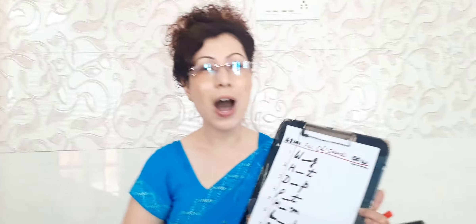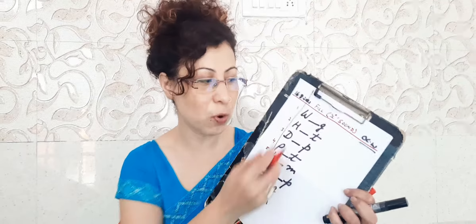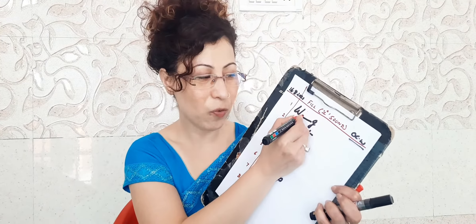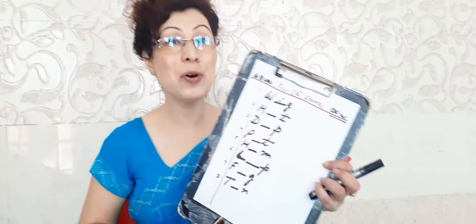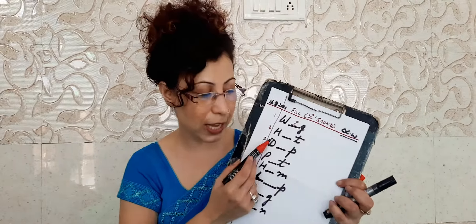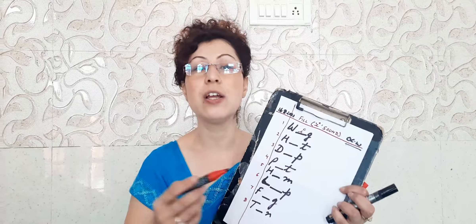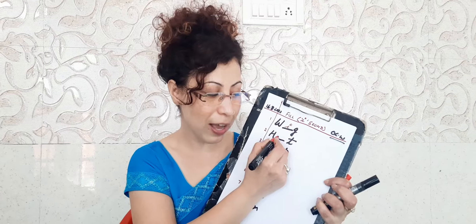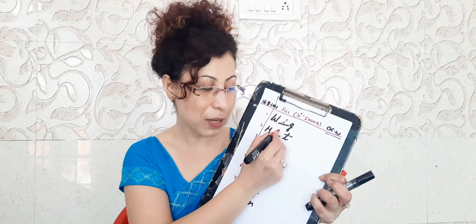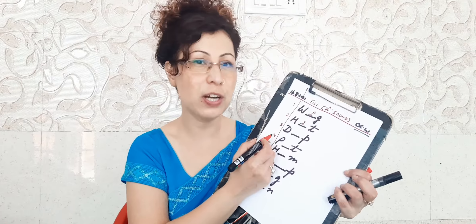Let's begin with number 1: W-G. Now just use the small i. What is W-I-G? W-I-G — wig. Let's move to the next word: H-T. Let's use the small i. It becomes H-I-T — hit.